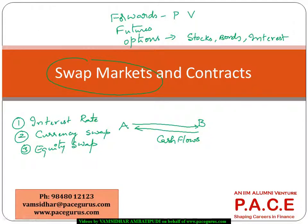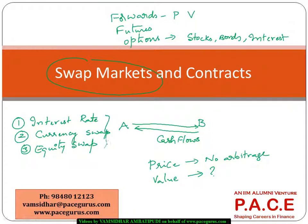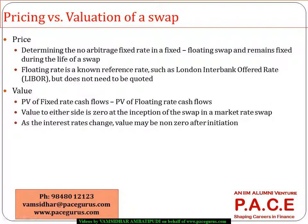For each of these swaps, we will look at the pricing — how do I decide the no-arbitrage price for the swap — and once the price is decided, somewhere after the initiation of the contract, what is the value of the swap to either of the parties? That is what we will look at for each of these different kinds of swaps. When we talk about interest rate swaps, the price as well as the value — the price in an interest rate swap is nothing but the fixed interest rate.